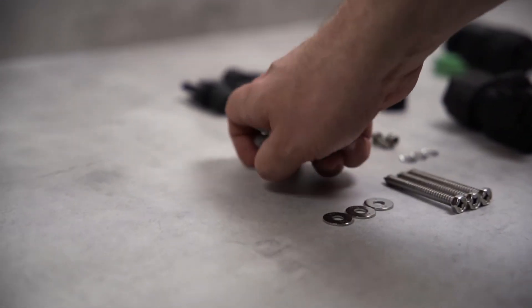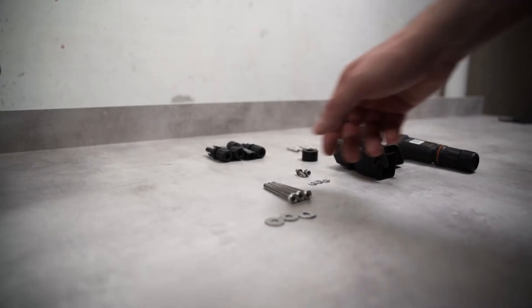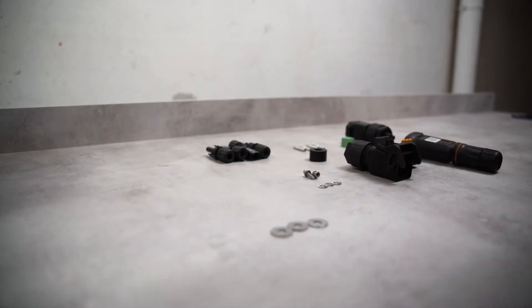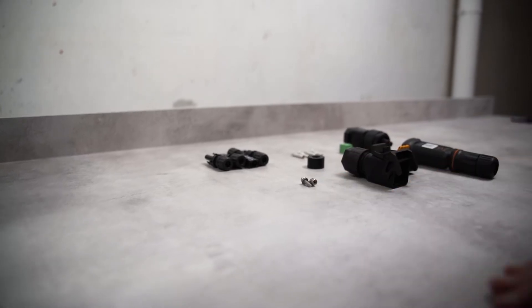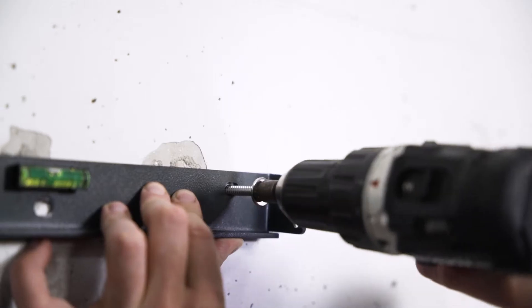The dowels for mounting the inverter on the wall are included in the delivery. You will also need a cordless screwdriver for attaching the mounting plate. The required screws are part of the delivery.